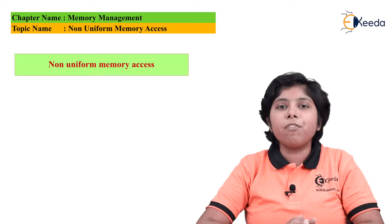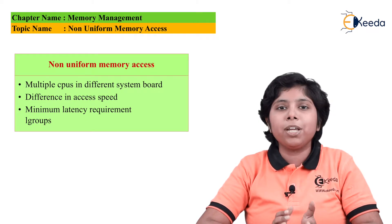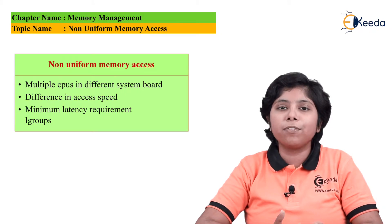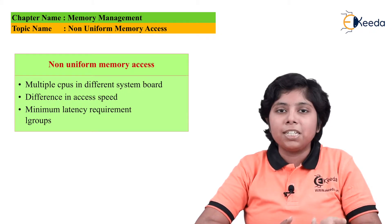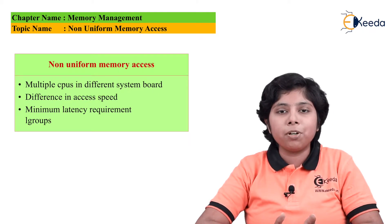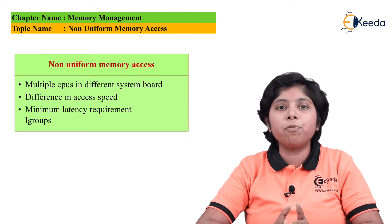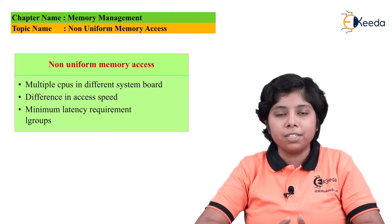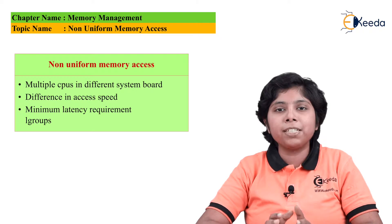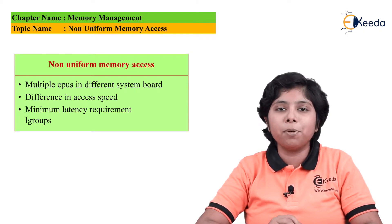Till now we have assumed that main memory is created equally or at least accessed equally, but this is not true for most operating systems nowadays. Systems having multiple CPUs and memories are having this type of non-uniform memory where the multiple CPUs and the memory are placed on different system boards on that particular processing unit.